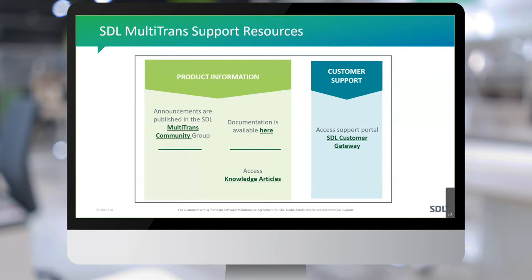There are multiple different resources, which you can see from this slide. In the community, which I'll demonstrate later, this is where you'll be able to find out information around the product itself — information around releases — and you'll also be able to engage with other customers, peers, or STL staff around different aspects of the product. We have documentation around our products, a knowledge-based system, and the most important thing on this slide is the STL customer gateway. The other three things in green we can all access directly from the customer gateway.